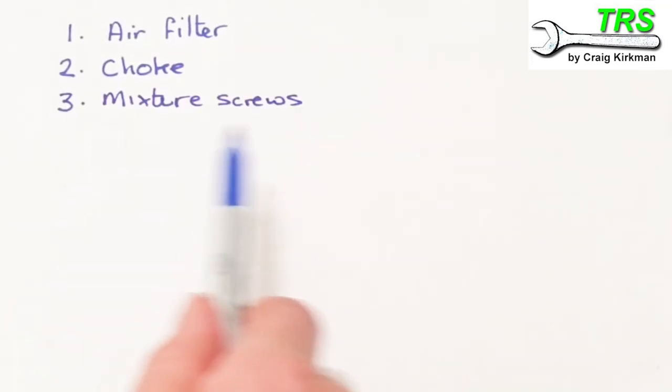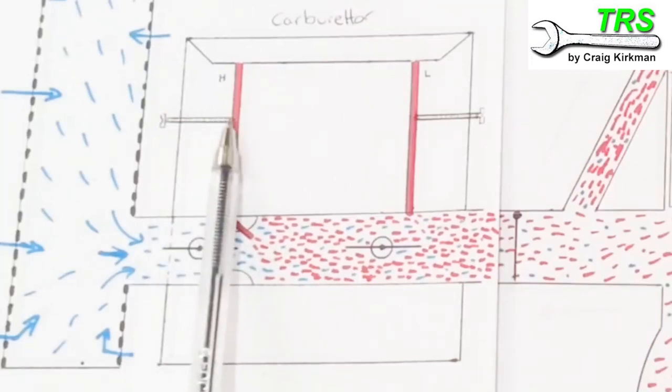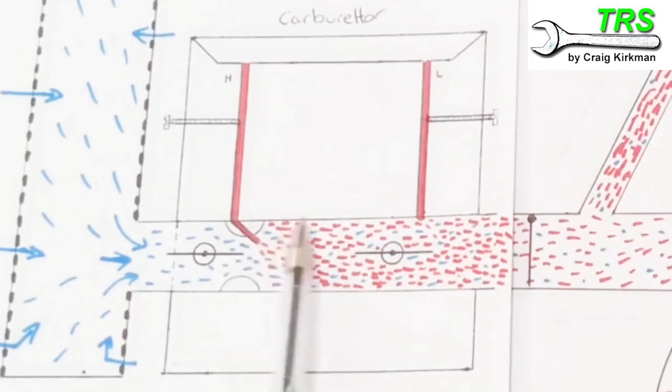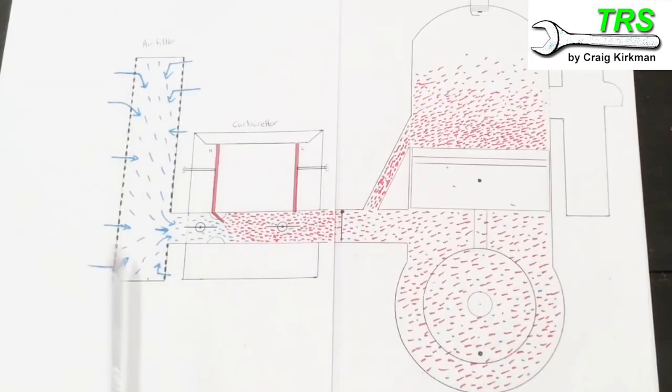And number three, mixture screws. Is the fuel air mixture settings right? If the mixture screw is screwed too far out, it will allow too much fuel to come down here and out into the inlet, even though there's enough air coming through. And if there's too much fuel allowed through there, then we're going to get the same problem. We're going to get flooding.